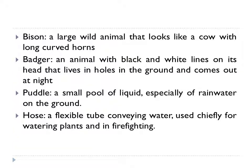Bison — a large wild animal that looks like a cow with long curved horns. Badger — an animal with black and white lines on its head that lives in holes in the ground and comes out at night. Then puddle — a small pool of liquid, especially of rainwater on the ground. And the last word is hose — a flexible tube conveying water, used chiefly for watering plants and in firefighting.